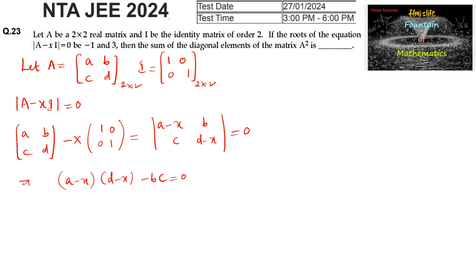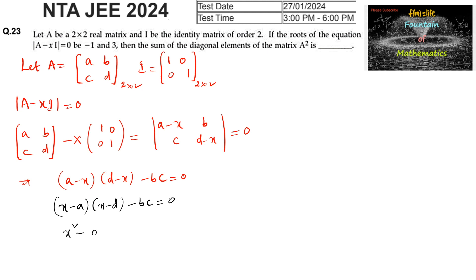Expanding: ad − ax − dx + x² − bc = 0, which can be rewritten as x² − (a+d)x + (ad − bc) = 0. This is the characteristic equation of matrix A.